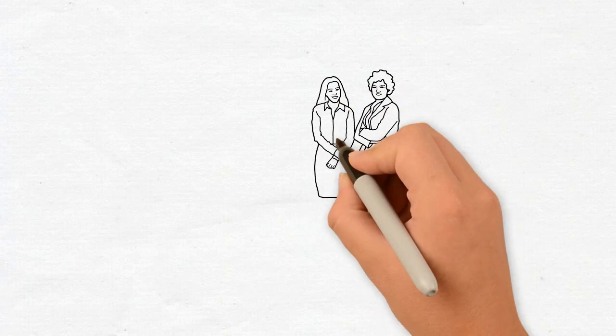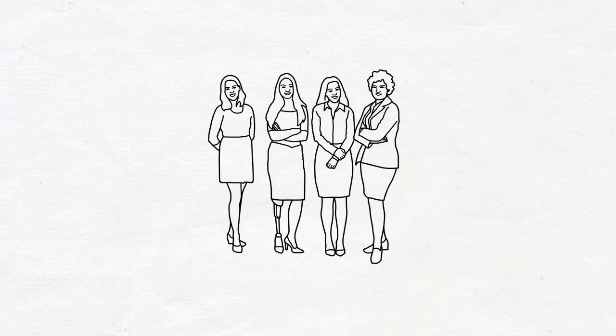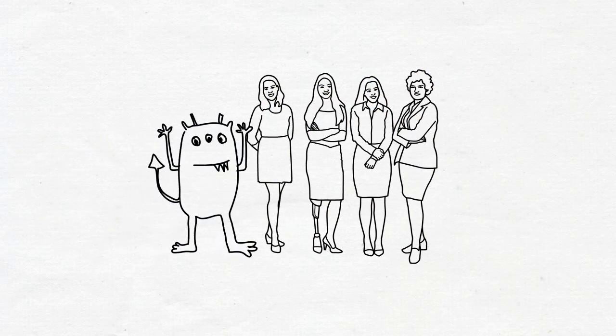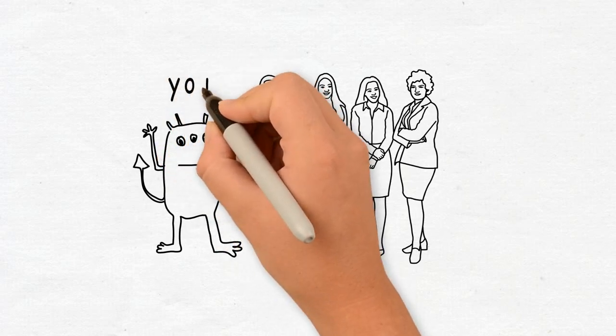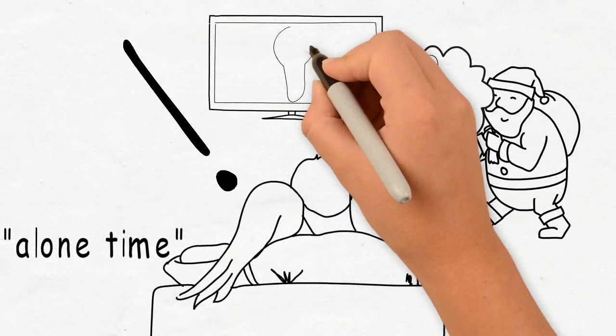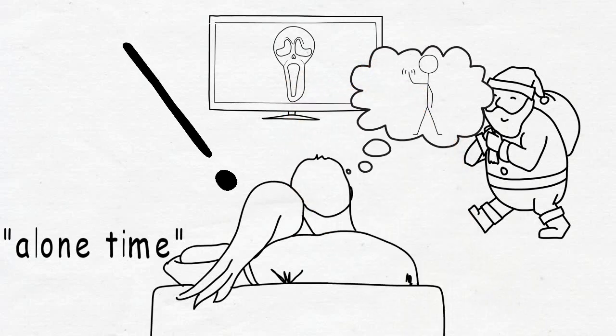But that means she wants some alone time with you. Think about it. If she was only physically attracted to you, she'd want nothing more than to show you off to all the friends. But she doesn't. She wants to be around you at your most real state, vulnerable and alone. She's really into you!